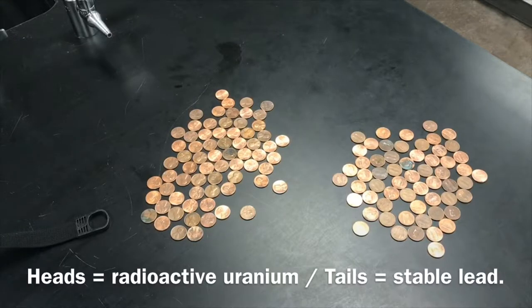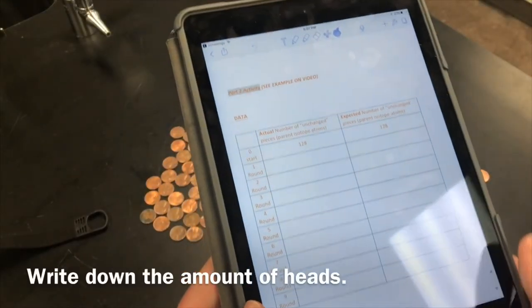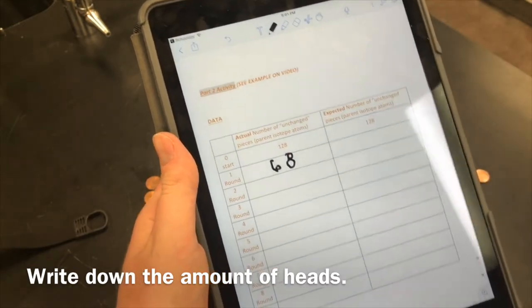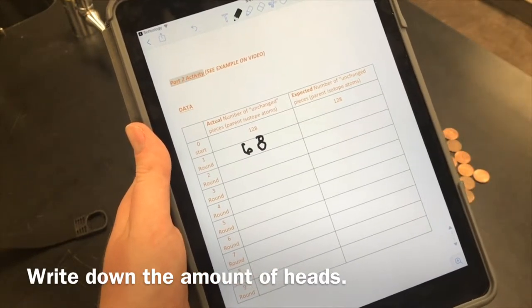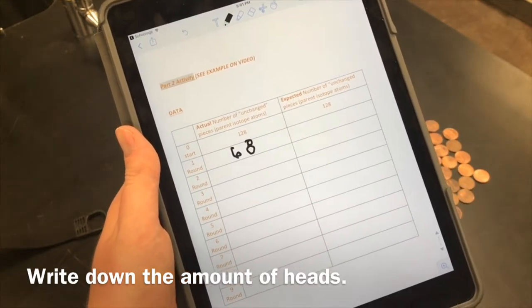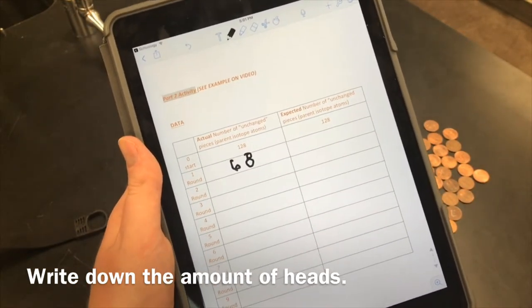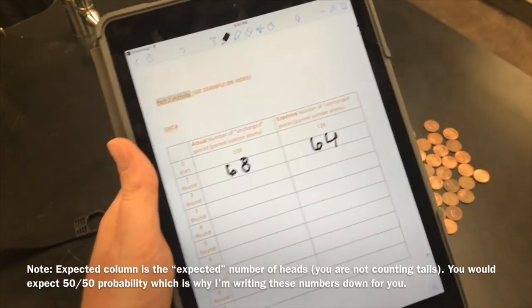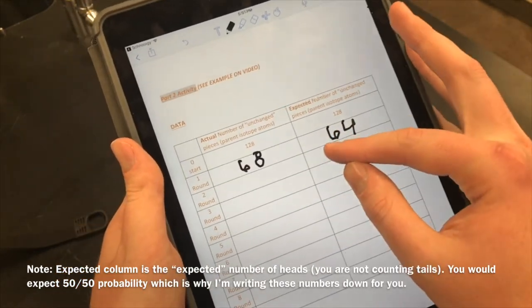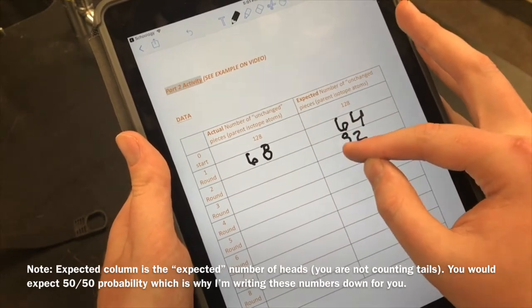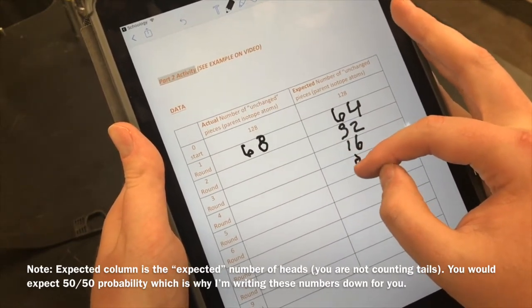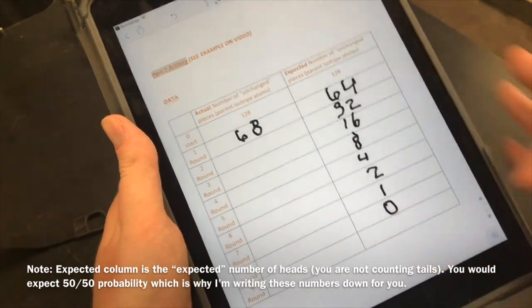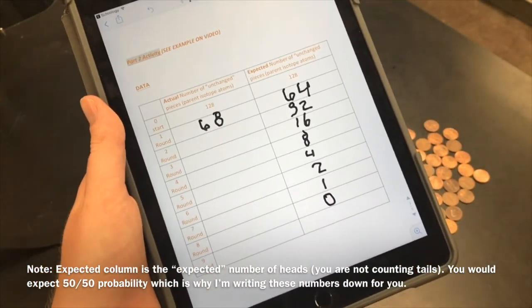We're going to be counting the heads. I had 68 heads, so 68 unchanged isotopes. I would expect, because this is half-life, I would expect 64. You can fill in this table. The expected is going to always be half of the previous number: 64, 32, 16, 8, 4, 2, 1, and then 0.